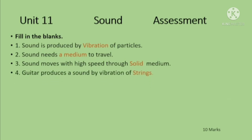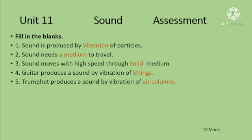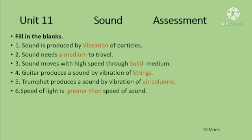Fourth: guitar produces a sound by vibration of strings. Fifth: trumpet produces a sound by vibration of air columns. Sixth: speed of light is greater than speed of sound.